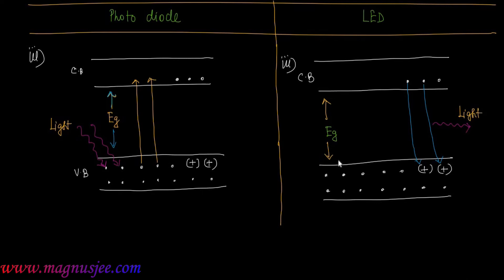So the key difference is: for the photodiode, valence electrons jump from the valence band to the conduction band; but for the LED, conduction electrons travel from the conduction band to the valence band.